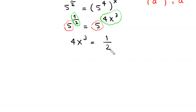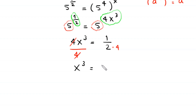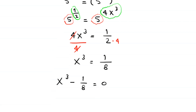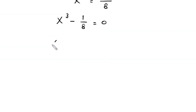From here we divide both sides by 4. The 4 cancels and we are left with x cubed equal to 1 over 8. Moving 1 over 8 to the left hand side, this becomes x cubed minus 1 over 8 equal to 0. Since 1 over 8 is the same as 1 over 2 whole cubed, we have x cubed minus (1 over 2) cubed equal to 0.